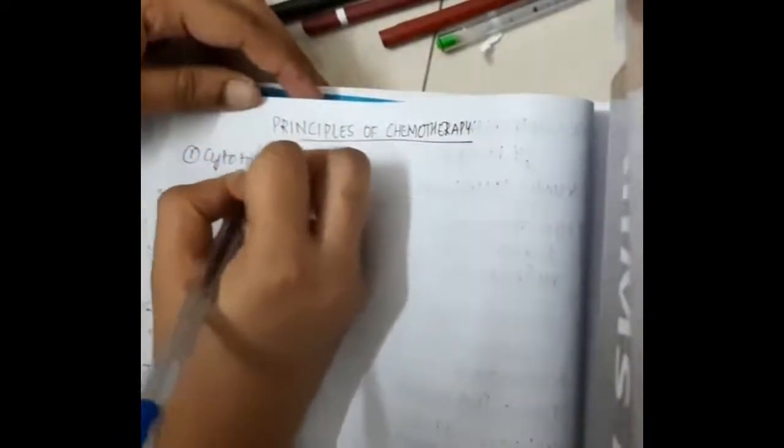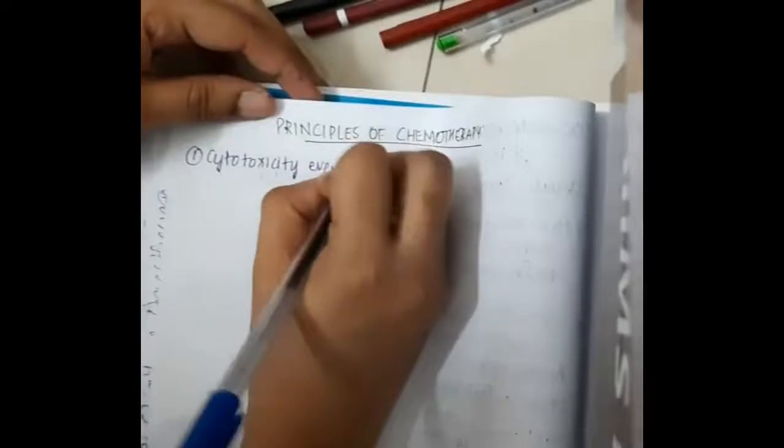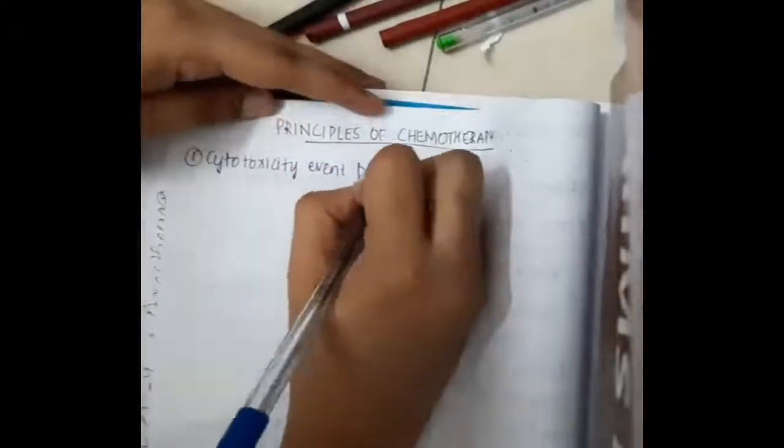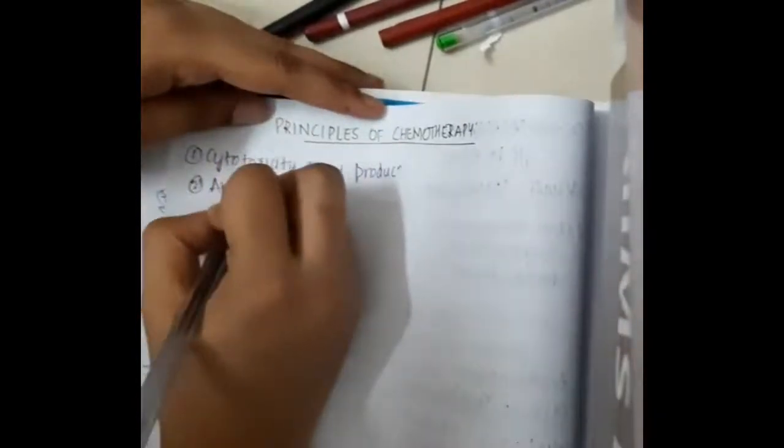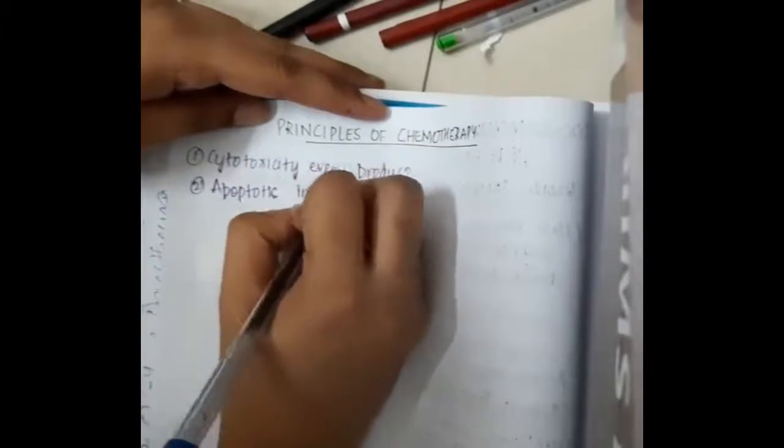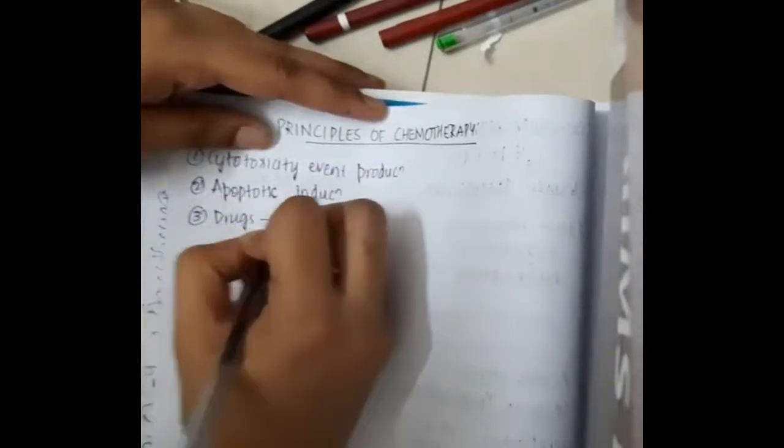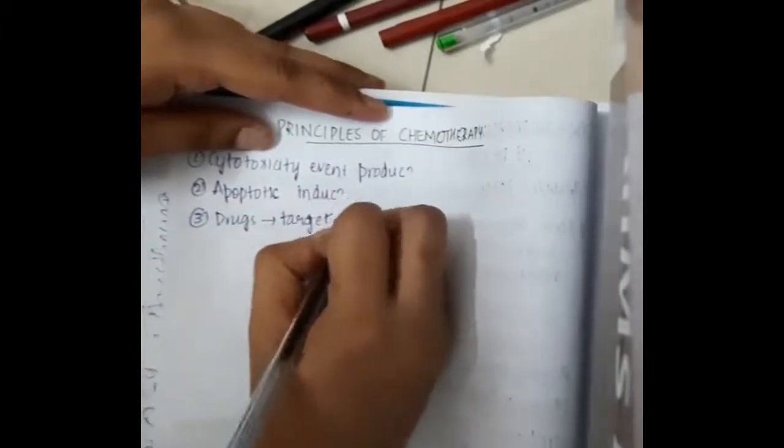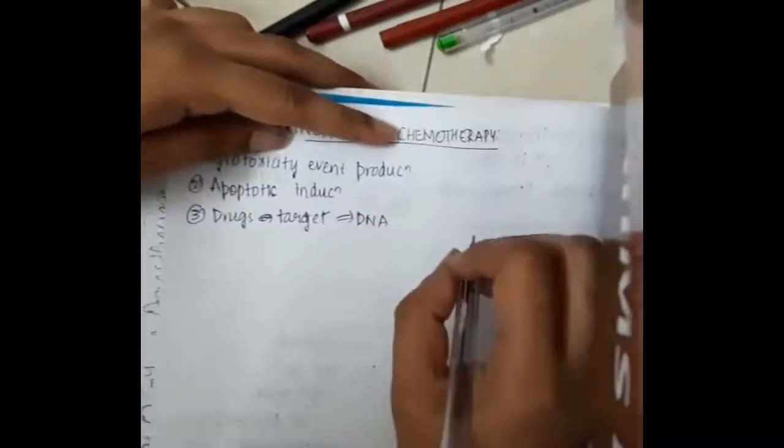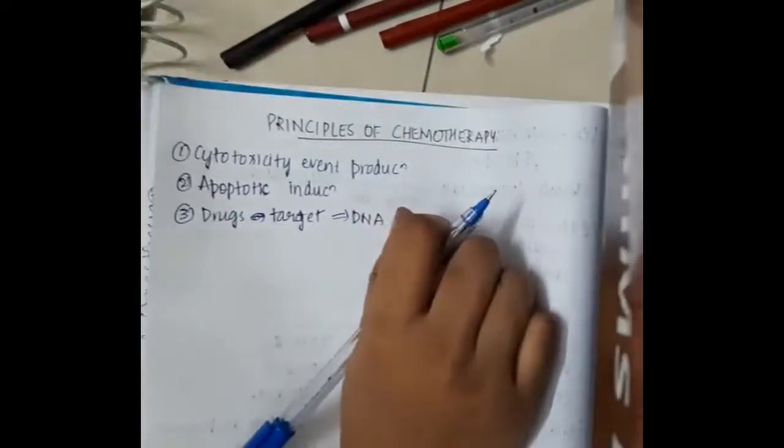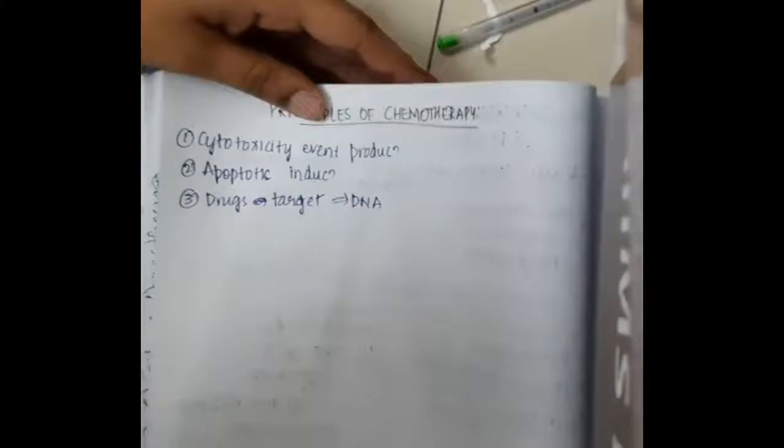In the principles of chemotherapy, first this includes cytotoxicity, apoptosis induction, or the chemotherapy agents work by cytotoxicity, apoptosis induction, or by acting on drug targets that mainly act on DNA.